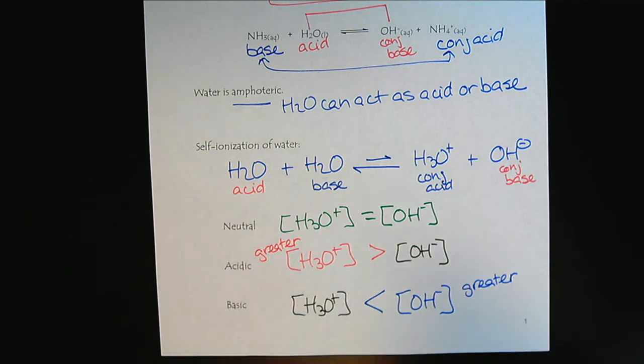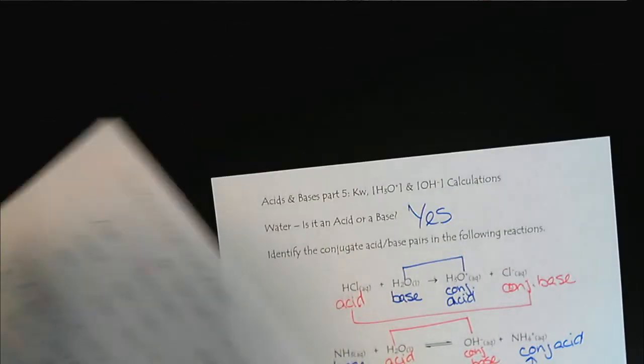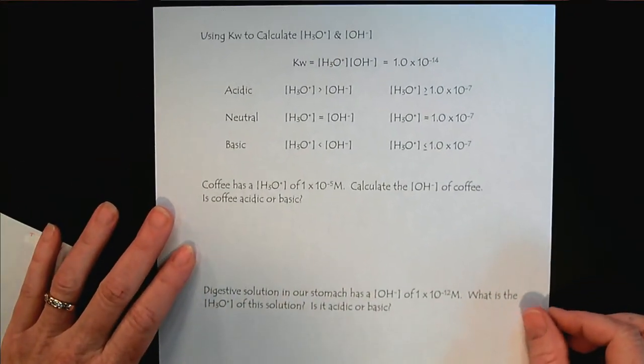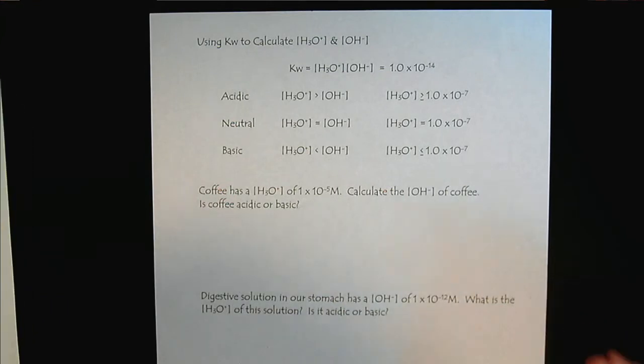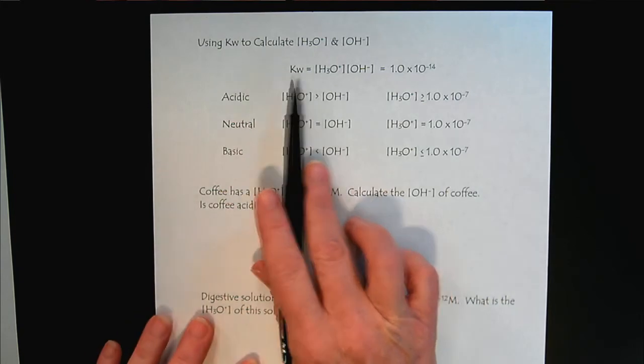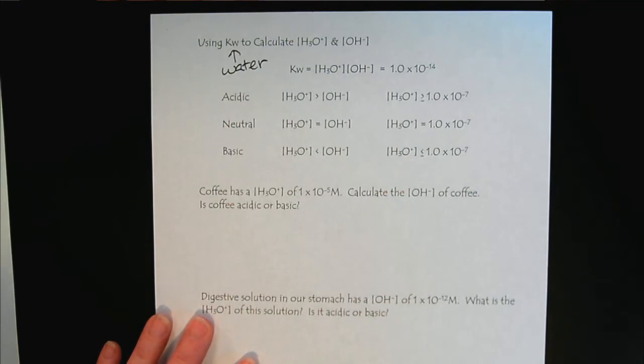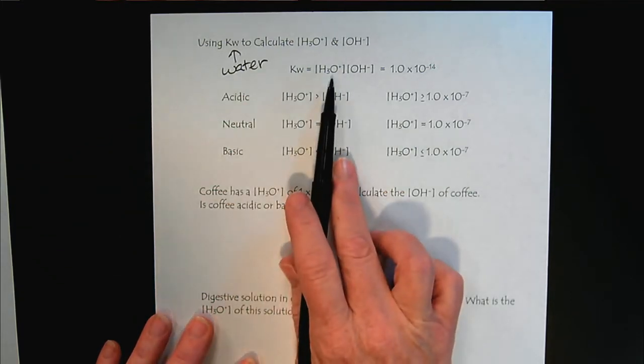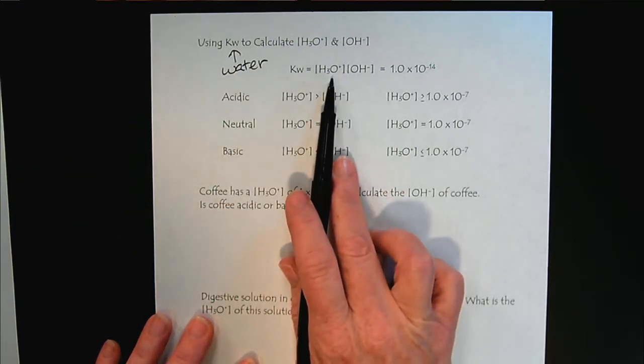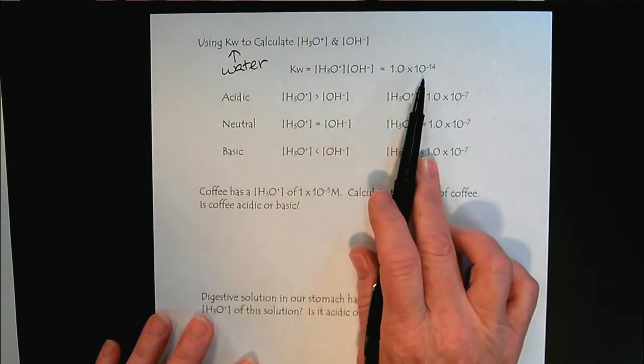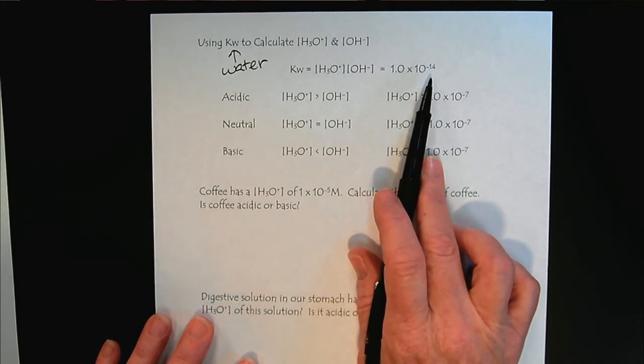So some people that have traveled this journey before us, they did a bunch of measurements with water. And they made some important observations that can help us perform calculations. We have the KW expression. And so this is for, the W is standing for water. So when we're in an aqueous environment, what we've learned is that if we multiply the hydronium concentration by the hydroxide concentration, they're always going to add up or multiply to 10 to the minus 14.